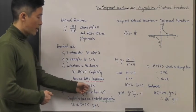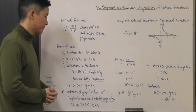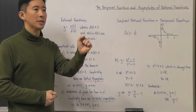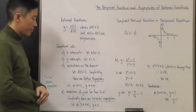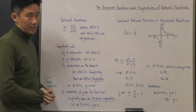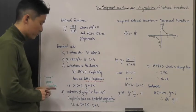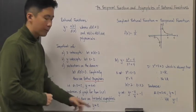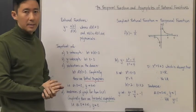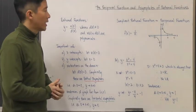As x approaches a restricted value c, y is going to approach positive or negative infinity — that is what a vertical asymptote does in terms of the function. We're also going to look at tendencies of the graph far from the origin. Graphically, these are called horizontal asymptotes: as x approaches plus or minus infinity, y approaches the value c.